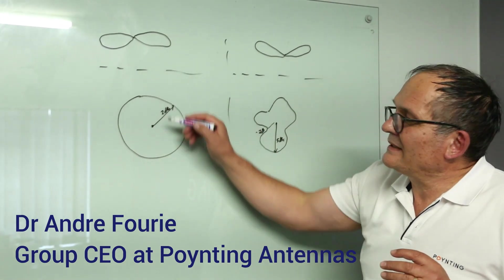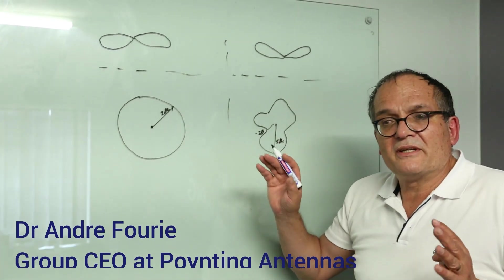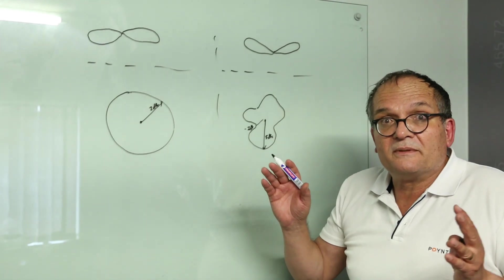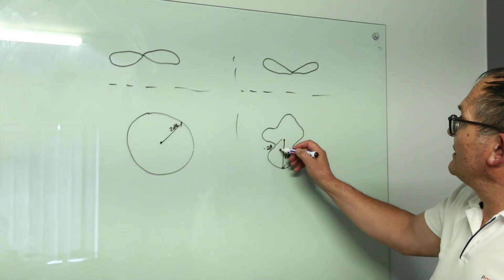they'll look at the patterns versus frequency. Normally, you find that at 900, the omni may be good. But if you go look up to 2.2 gigahertz, which is the typical 3G frequencies, you'll find that patterns start looking like this.